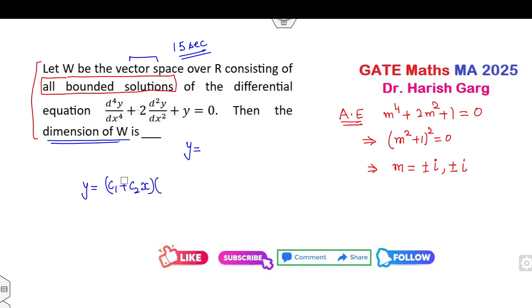Times cos x plus (c3 + c4x) times sin x. Fine. This is the solution corresponding to the auxiliary equation m = ±i.